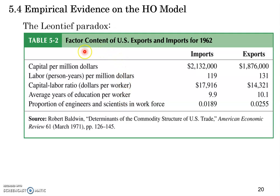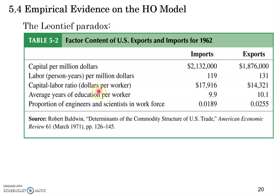We are looking at the factor content of U.S. exports and imports for the year 1962. The first line shows the amount of capital — machinery, equipment, tools — used to produce $1 million worth of U.S. imports and exports. The second line shows the amount of labor used to produce $1 million worth of U.S. imports and exports. The third line gives us the capital-labor ratio, that is, dollars of capital per worker, calculated by dividing the first line by the second line.